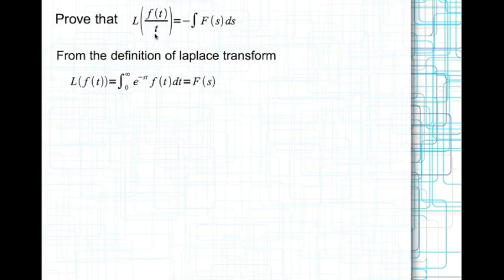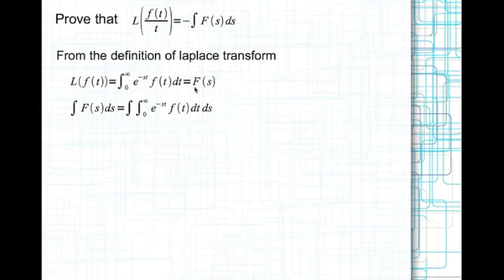Starting again with the definition of Laplace transform: the Laplace transform of f(t) is the integral from 0 to infinity of e to the power minus st times f(t) dt, which equals F(s). Let's integrate both the left-hand side and right-hand side with respect to s. The inner integral is with respect to t and the outer integral is with respect to s, and we can swap the order of integration.